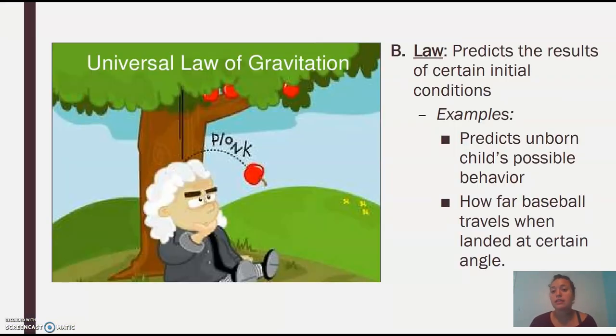The law predicts the results of certain initial conditions. So it's the what. So it's saying what is happening. So predicting the unborn child's like the actual behavior. It's going to be a lot of prediction due to observation. So observations will lead to an inference. It's usually what it'll be. So how far baseball travels when landed at a certain angle. So it's the what. So a theory is more of the why and the law is what's actually occurring.